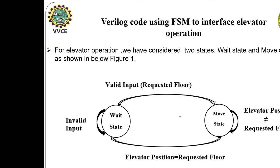In order to understand the operation, let us consider Figure 1, which is the state diagram. When a valid input or the requested floor is pressed, the elevator moves from the wait state into the move state. If there is any invalid input, it will stay in the wait state. In the move state, it checks whether the elevator position equals the requested floor, and if so, it returns to the wait state.